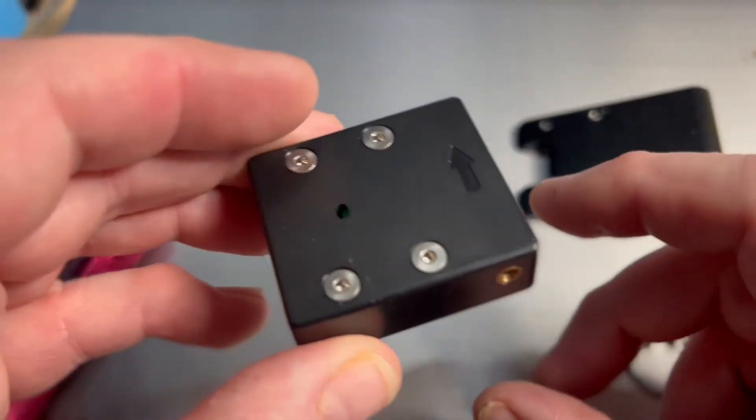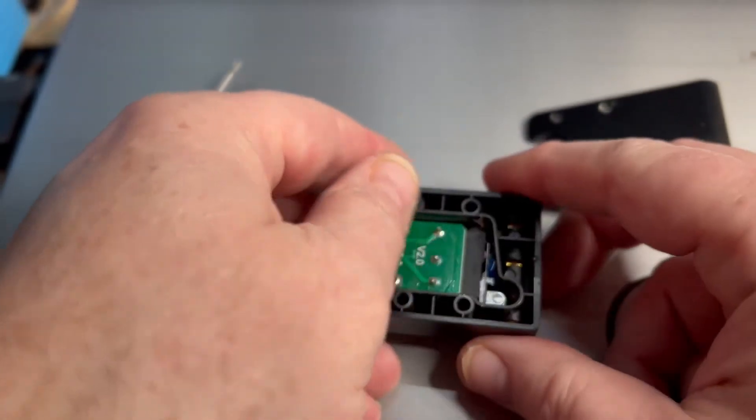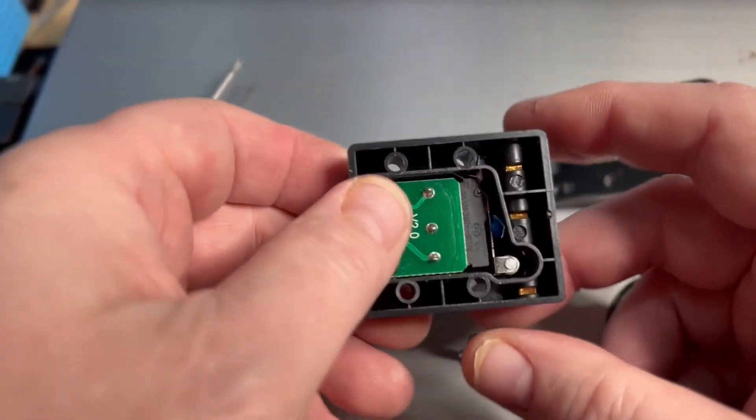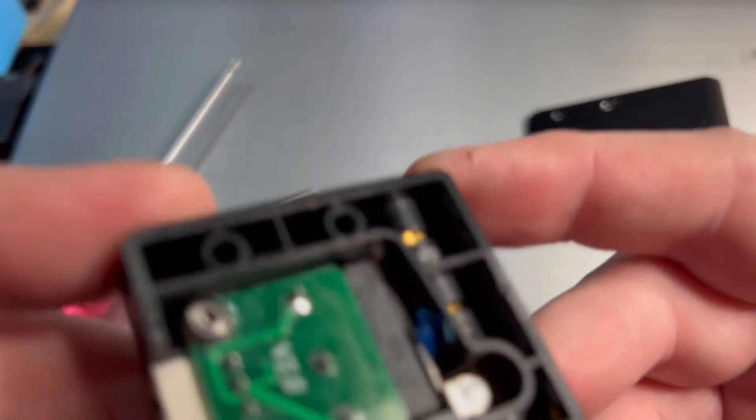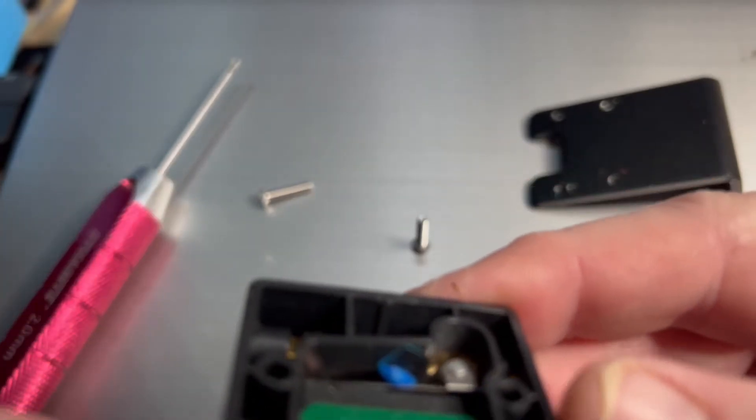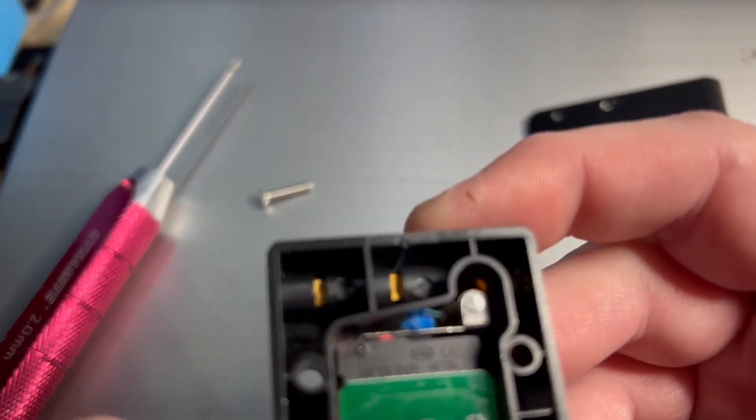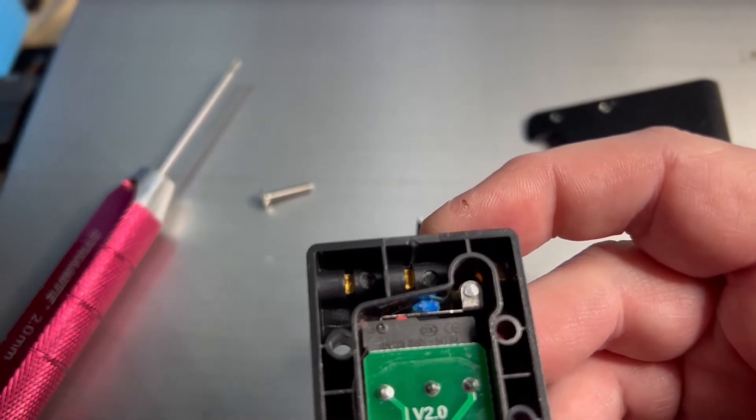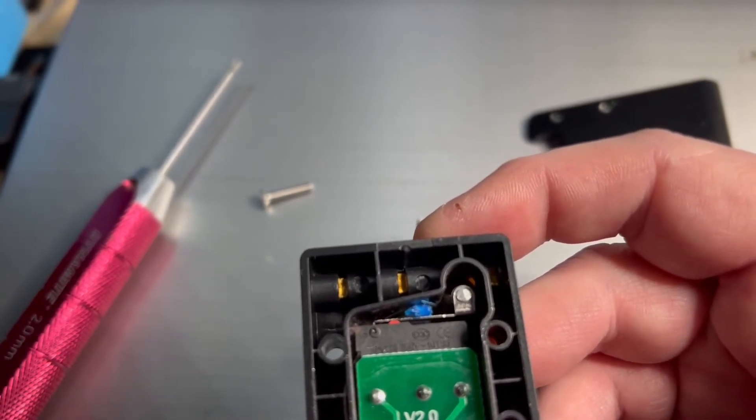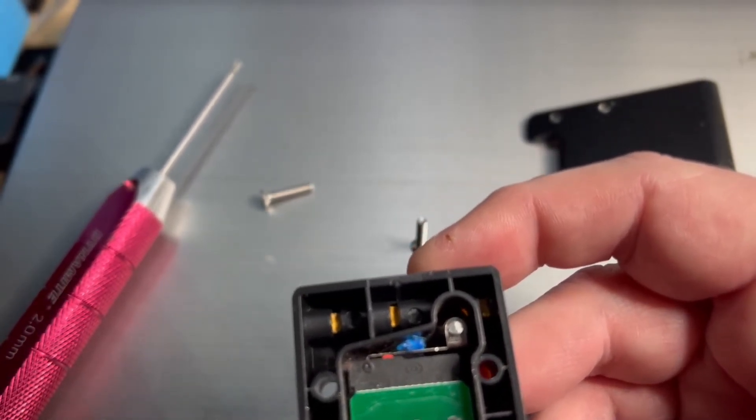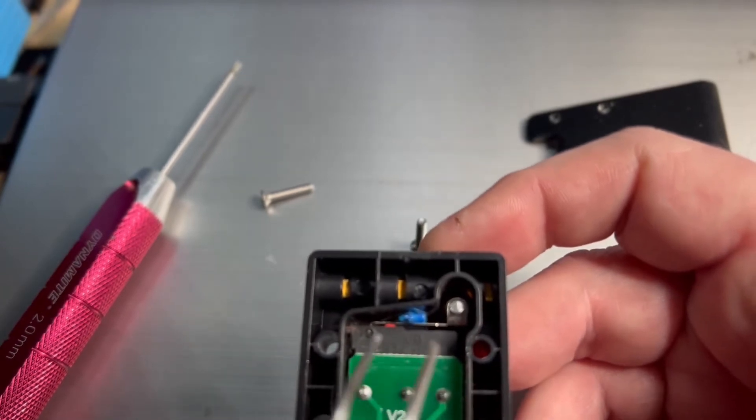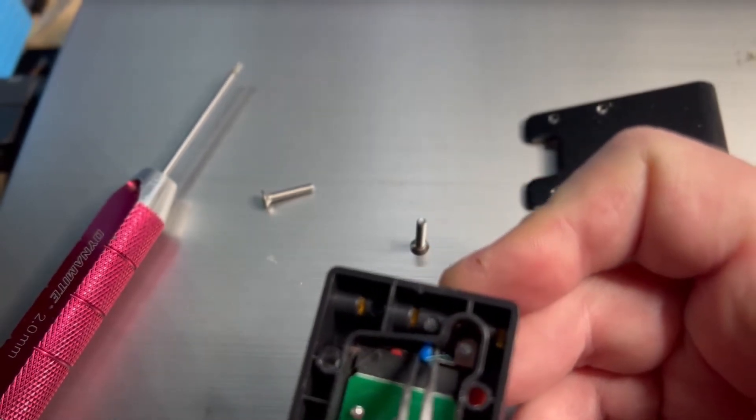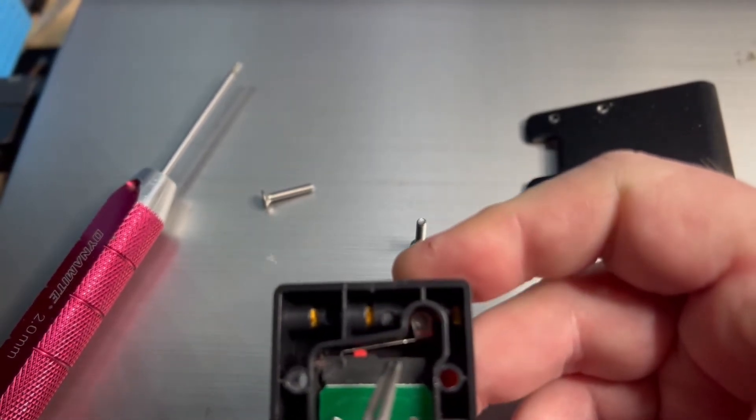There's the bracket. Screws. Huh. What's that? What the? So it looks like some filament got jammed up in here. Just four screws, right? Oh, and there we go.